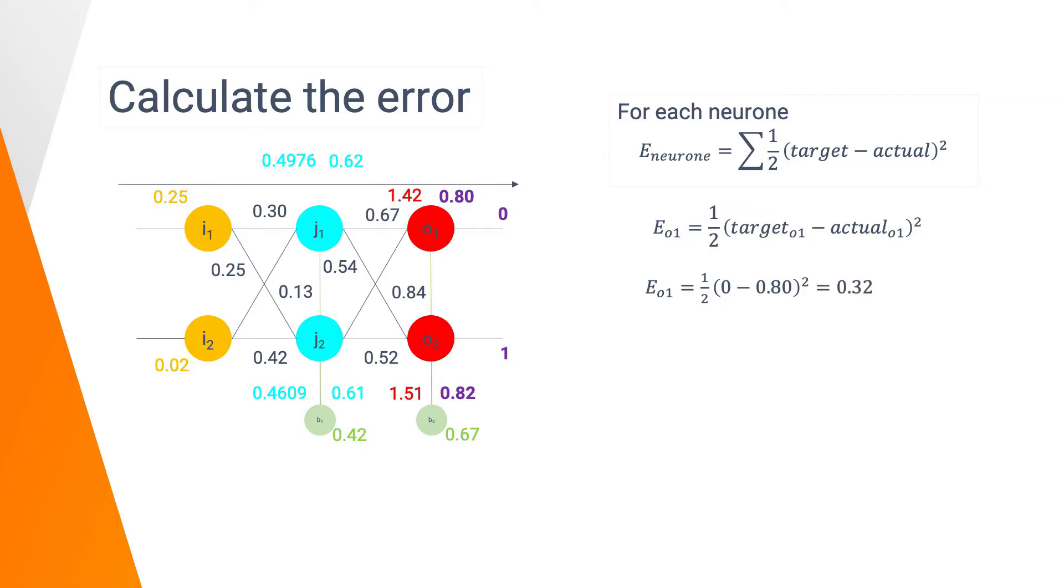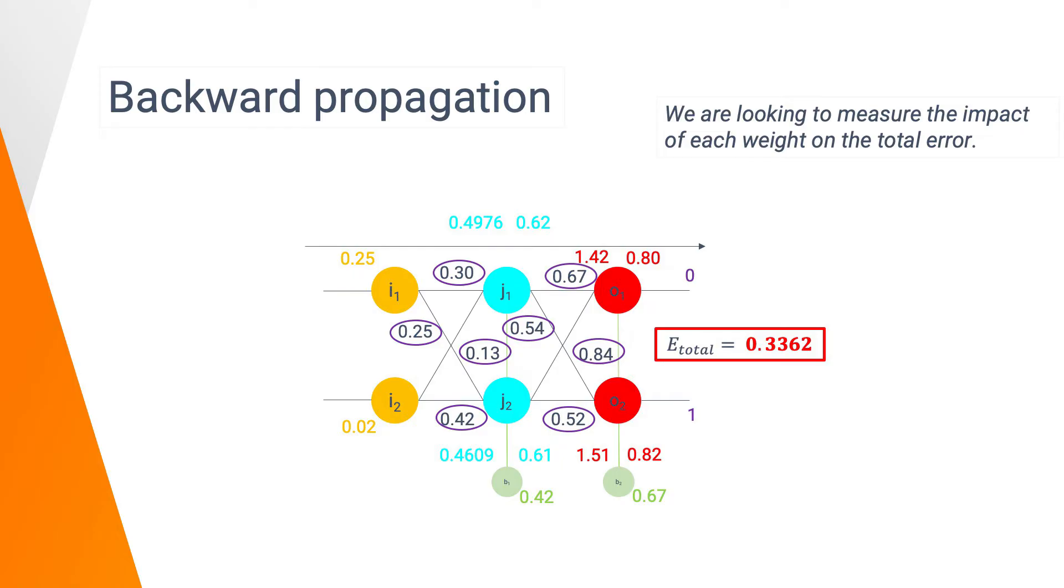We calculate the error for the output layer. Here, the value we were expected was 0 and we got 0.80. So, the error of O1 is 0.32 using this formula. Doing the same for the error of O2, we got 0.0162. So, the total error of this first iteration is 0.4362. Now that we know this total error, we are going to try to find the impact of each weight in order to reduce this error in the next iteration.